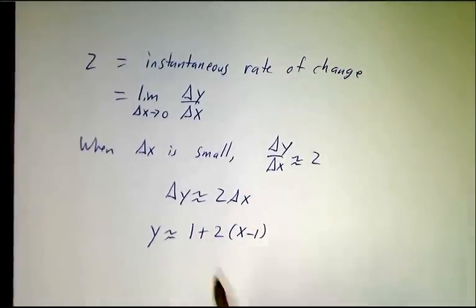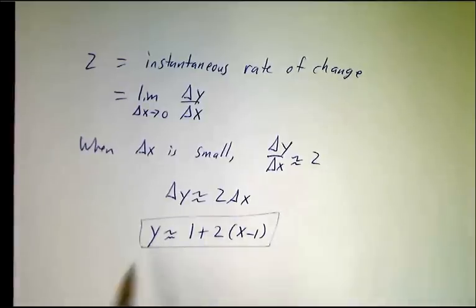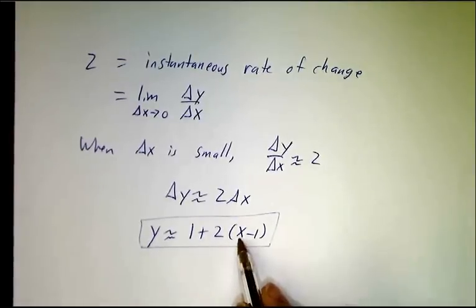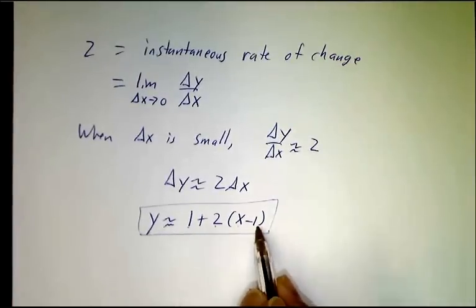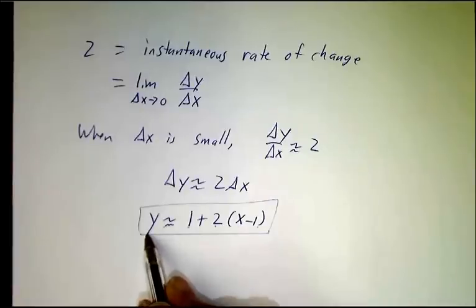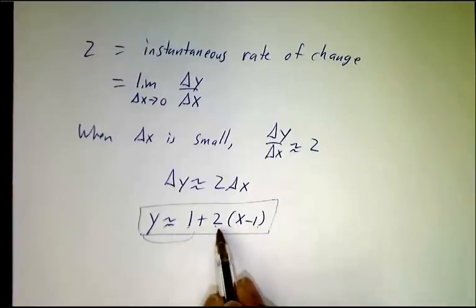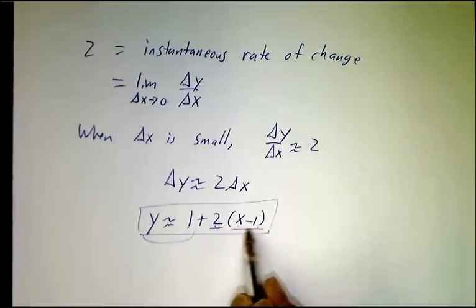Now, in fact, y equals 1 plus 2(x-1) is the equation of the tangent line. y minus 1 equals 2(x-1). The rise, that's y minus 1, is the slope times the run.